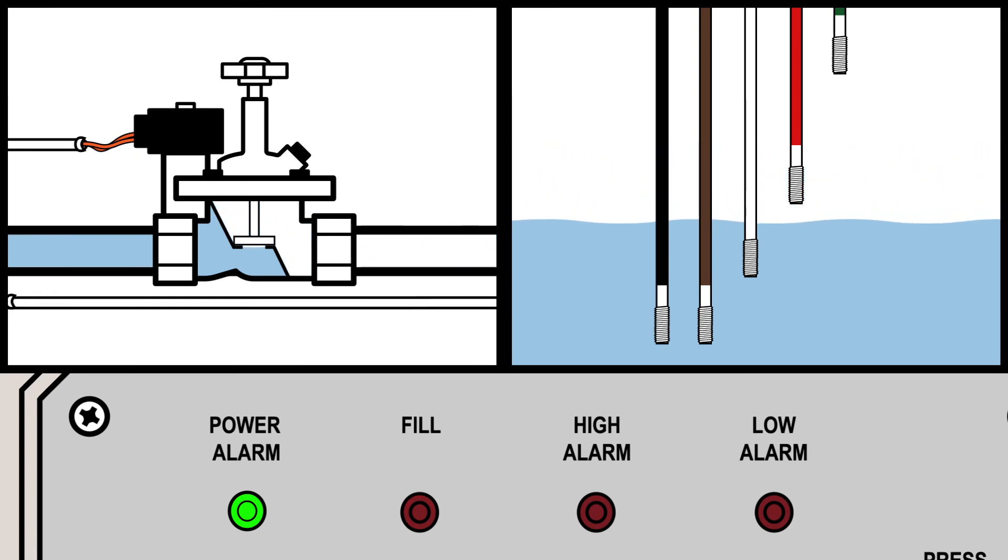If the water drops below the brown rod, the low alarm LED turns on with the fill LED. If the water rises too high and touches the green rod, the high alarm activates.